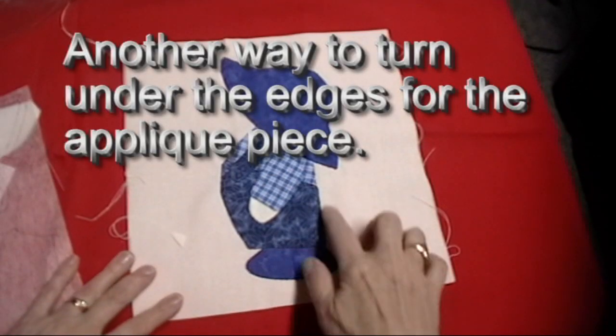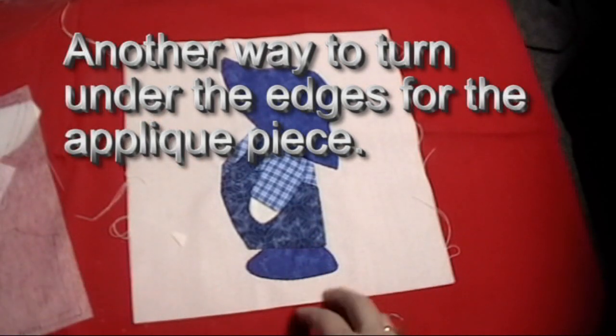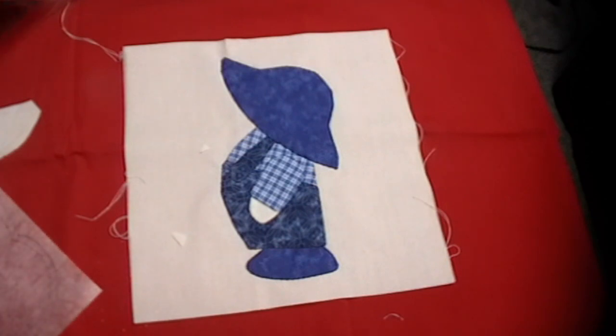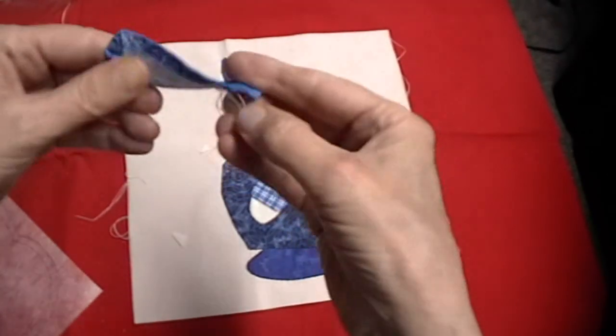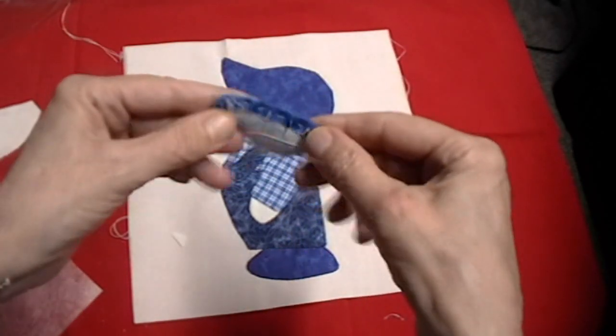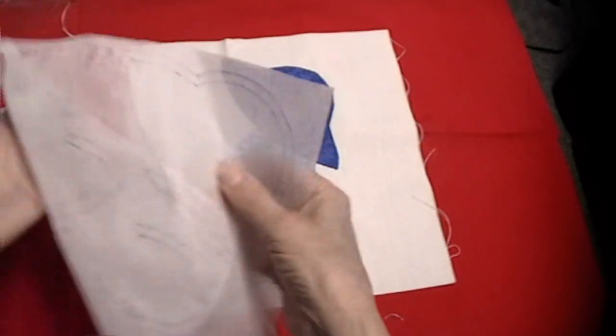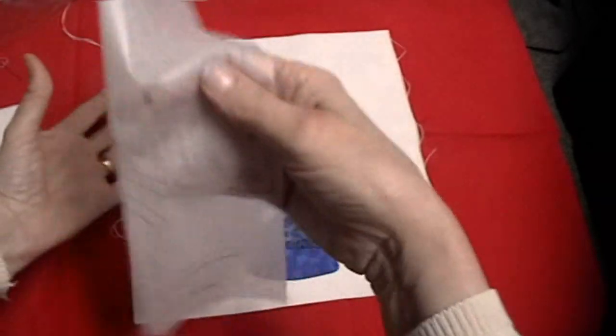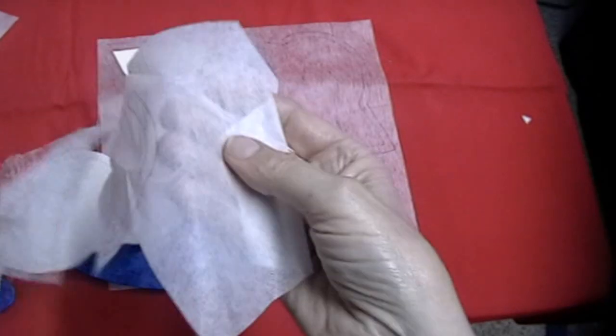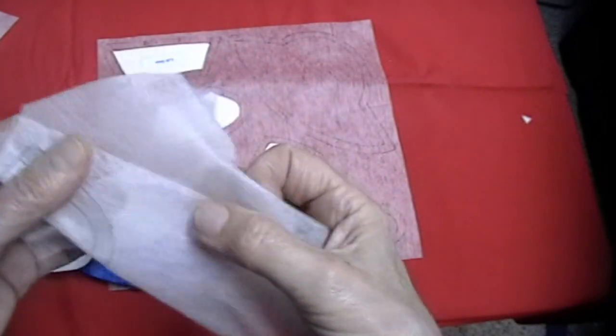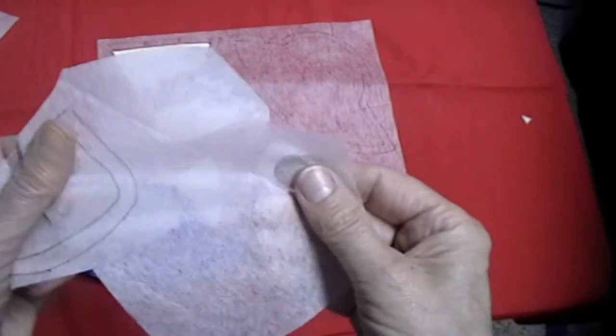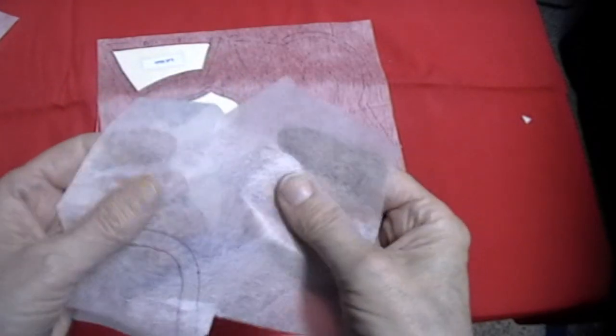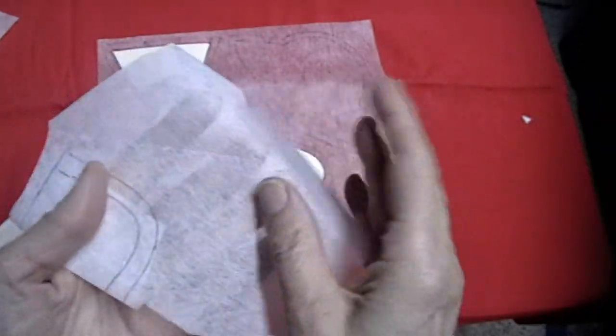The second way to turn your edges under for an applique is a little easier way than mother used to do, where you drew it and then you force the edges around on the line. You take, this is interfacing. The interfacing that I am using is not fusible. It is the sewable interfacing. It has no glue. So when you press it, you don't have to worry about sticking to your ironing board or sticking to anything else.